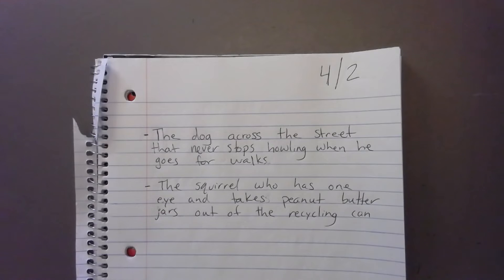So there are my first two ideas. I wrote, the dog across the street that never stops howling when he goes for walks. And I wrote, the squirrel who has one eye and takes peanut butter jars out of the recycling can. Again, this is a list. We're not worried about our sentences being perfect. I want you to pause the video and write down two or three of your own ideas from your own life. After you've done that, turn the video back on. We'll talk for a few more minutes.